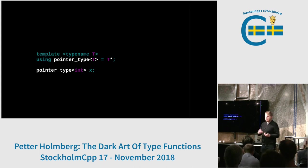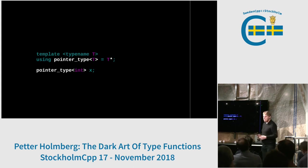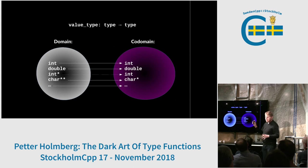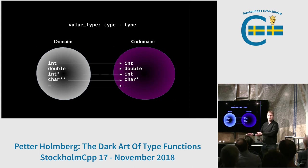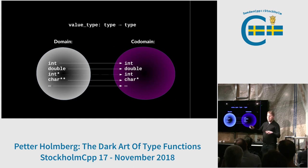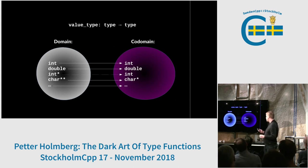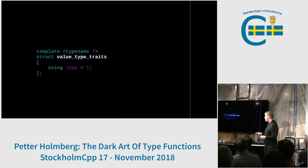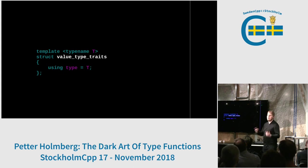But sometimes you want a type function that returns completely different types depending on the input. We can do that too. We're going to create a simple type function called value_type. The idea is that if you pass it a simple type like int or double, it just returns that type unchanged. But if you pass it a pointer type, it's going to return the type that the pointer points to — shaving off one level of pointers.